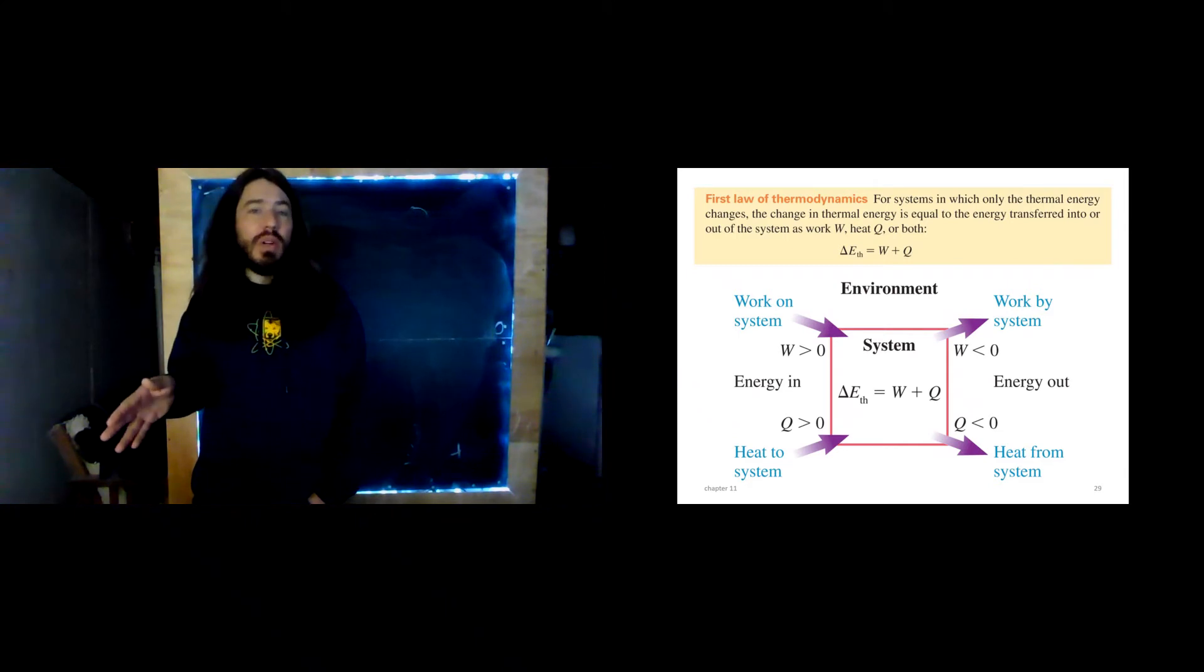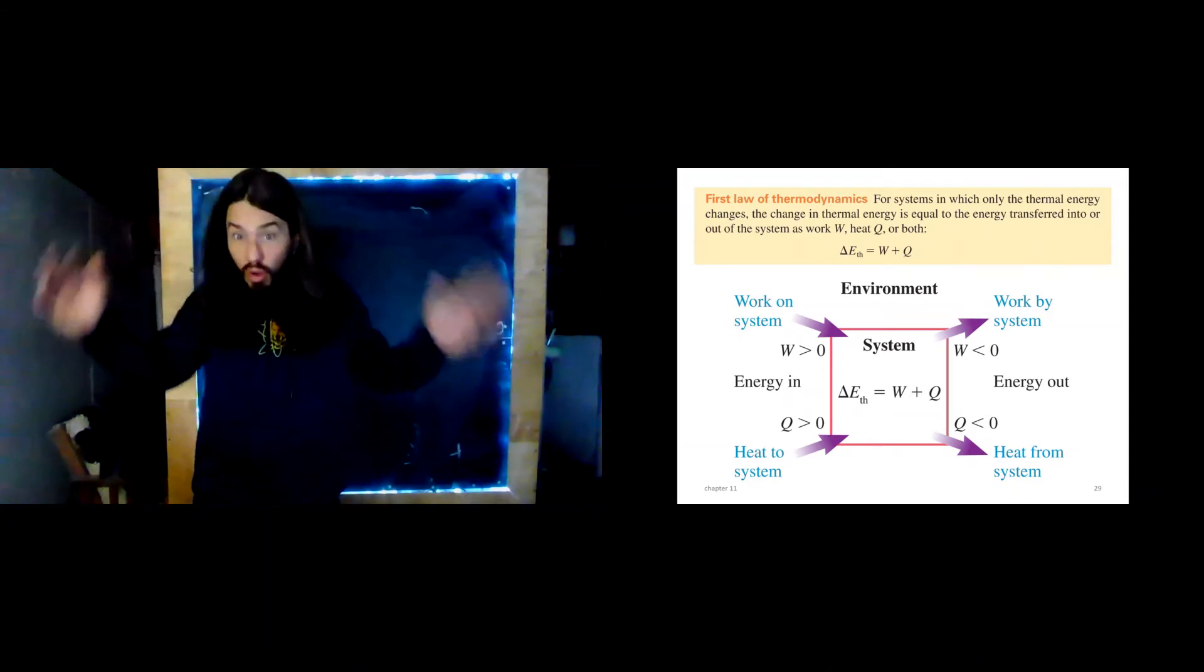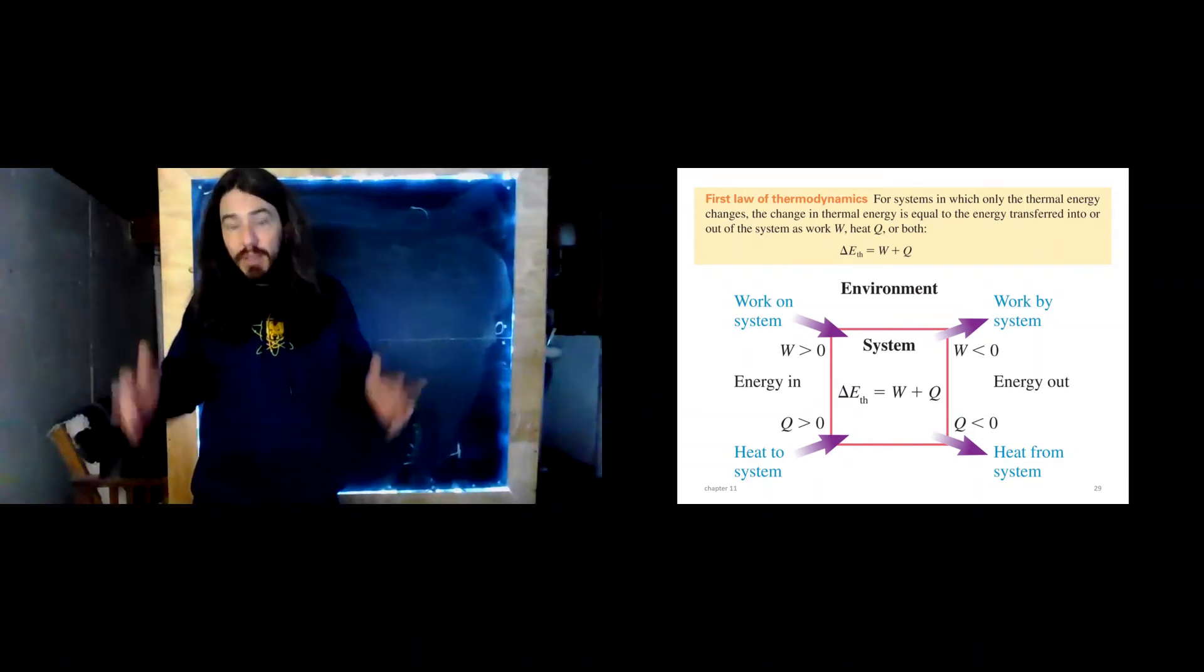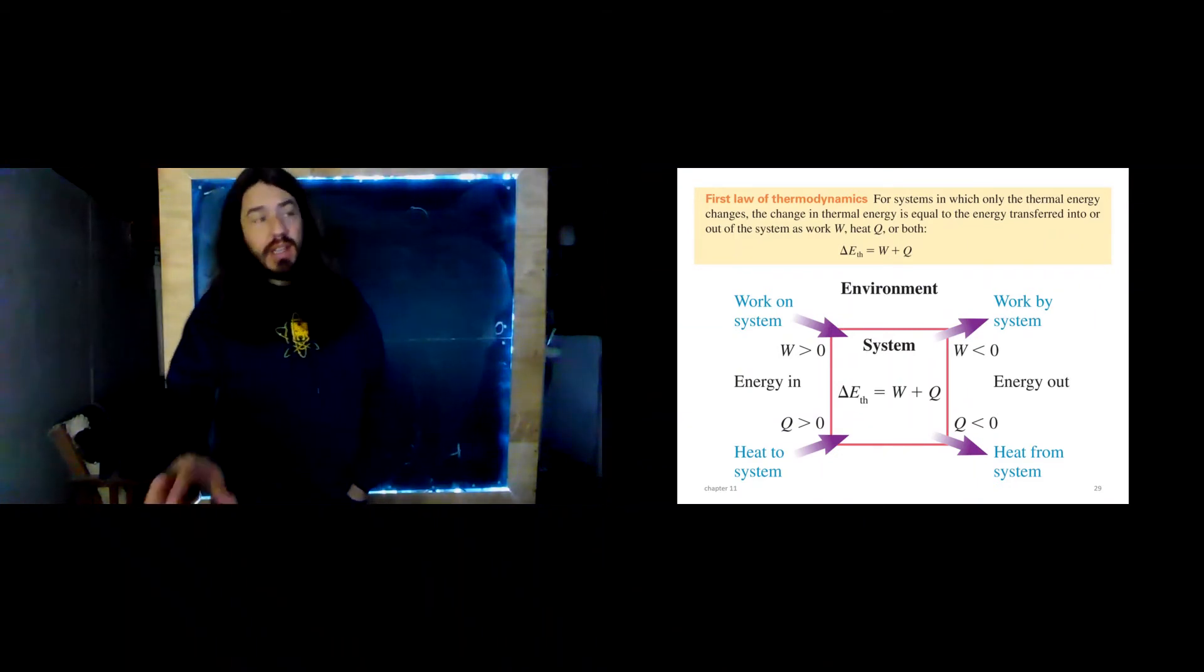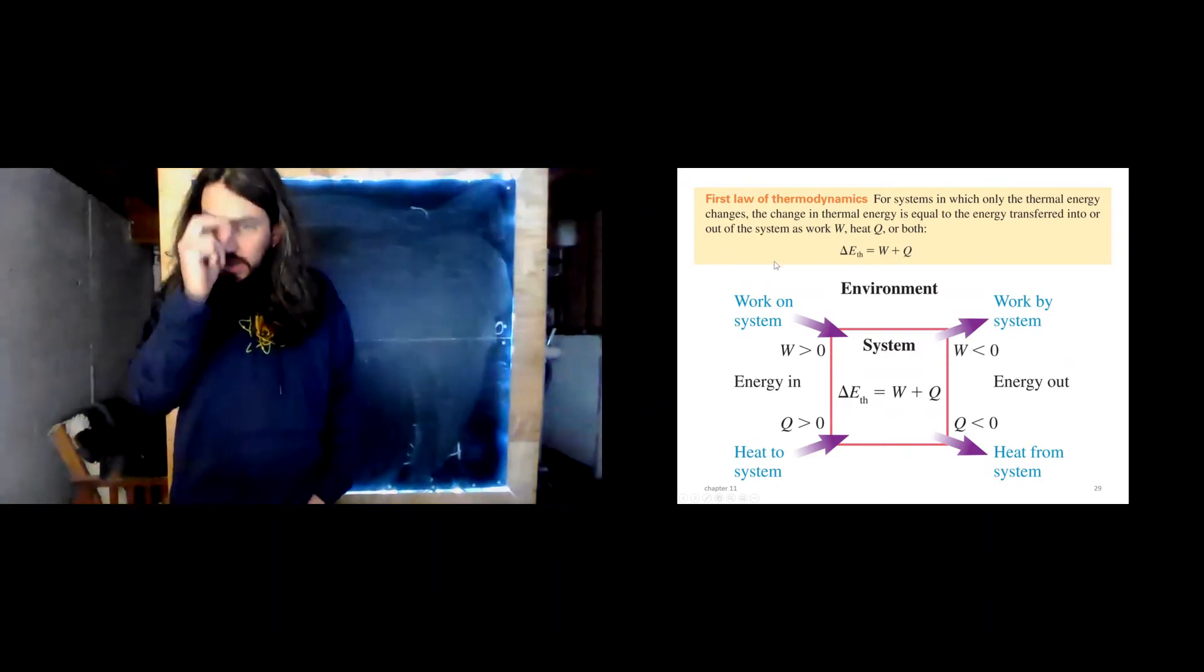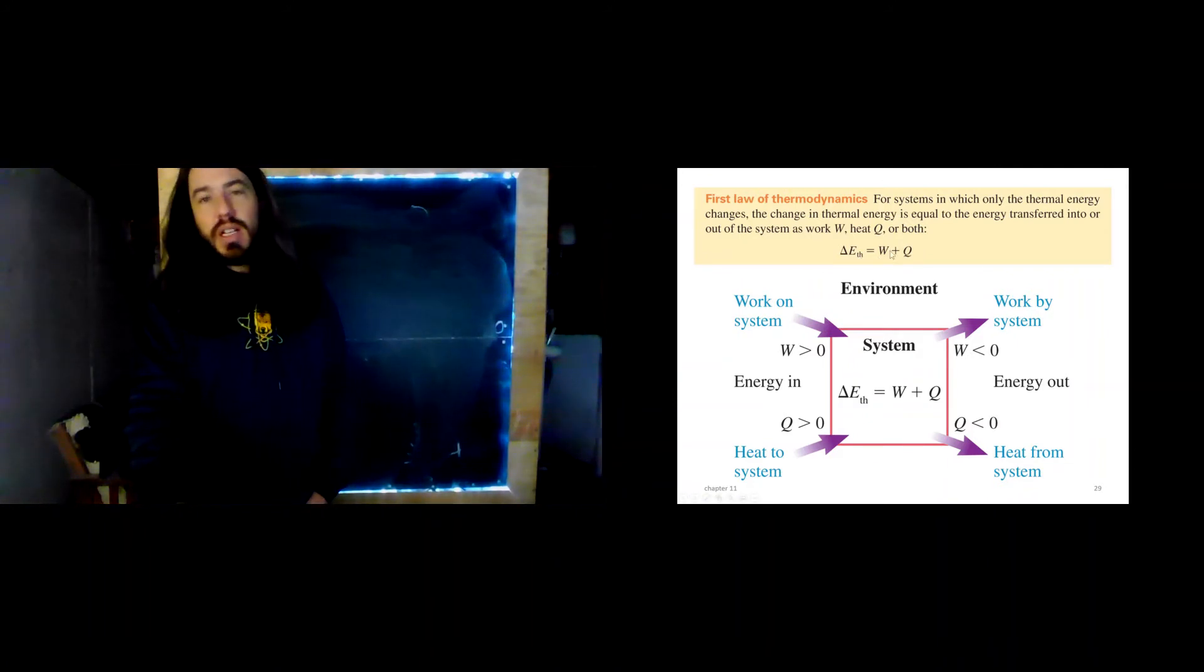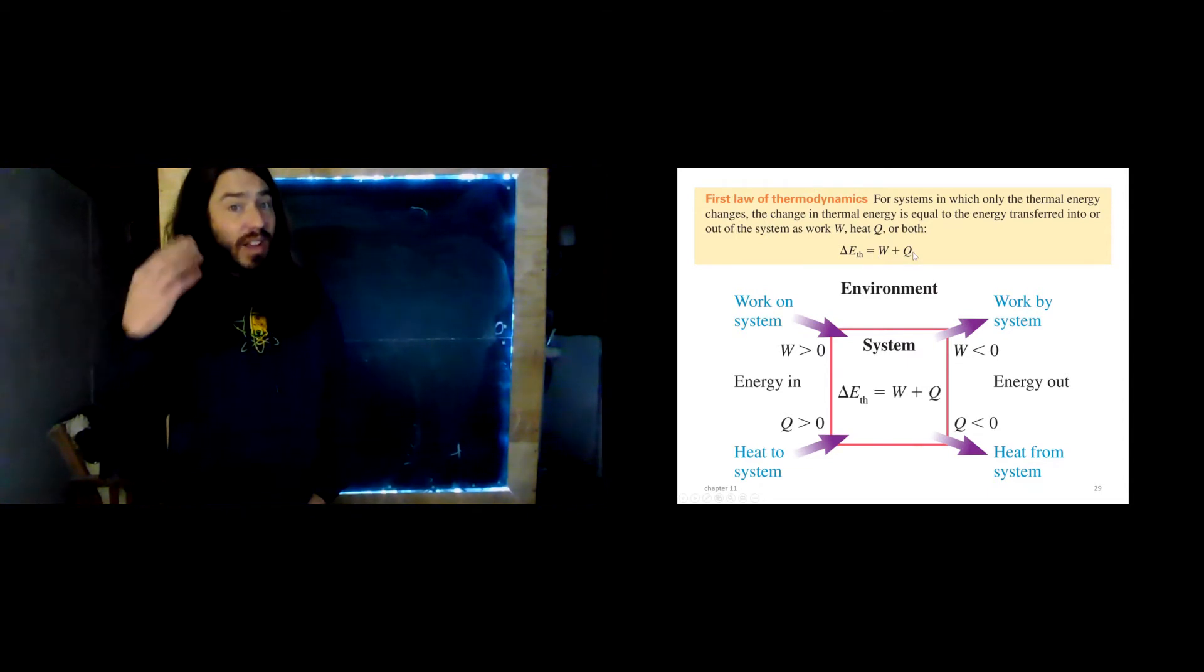In other words, this is just a mathematical statement of something that I've been saying now for a couple weeks, which is, how do we change the energy of a system? We can do work on it, or we can add heat to it. Heat and work are transfer variables. They are how we move energy into or out of a system. And that's exactly what this equation says. Now if we're just talking about thermal stuff, we're not adding to the potential energy or the translational kinetic energy or the rotational kinetic energy of the object as a whole. We're only talking about thermal energy here. So how can I change the thermal energy of the system? I can either do work on it or I can add heat to it.